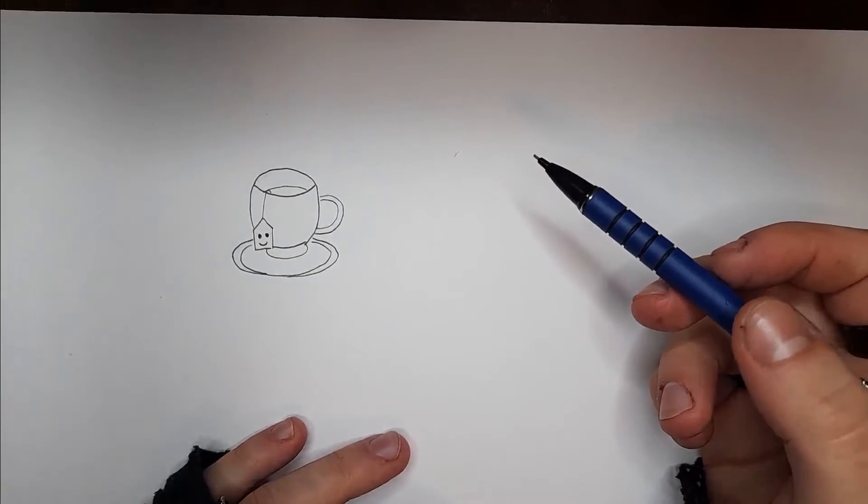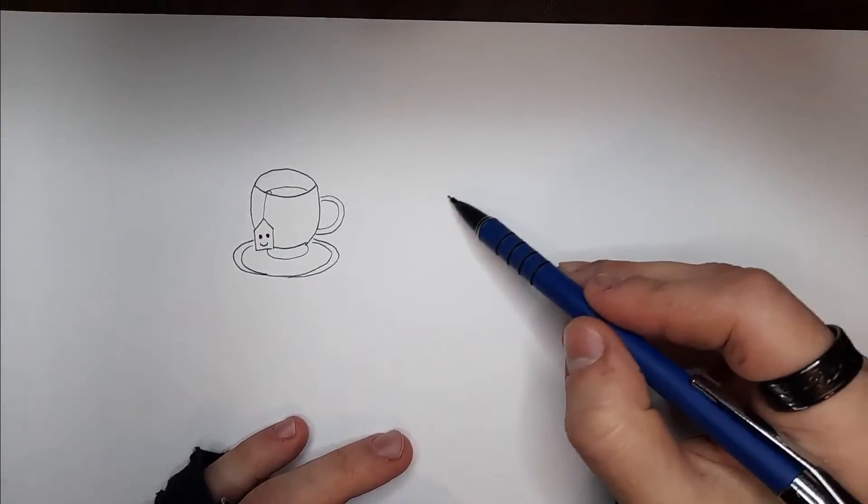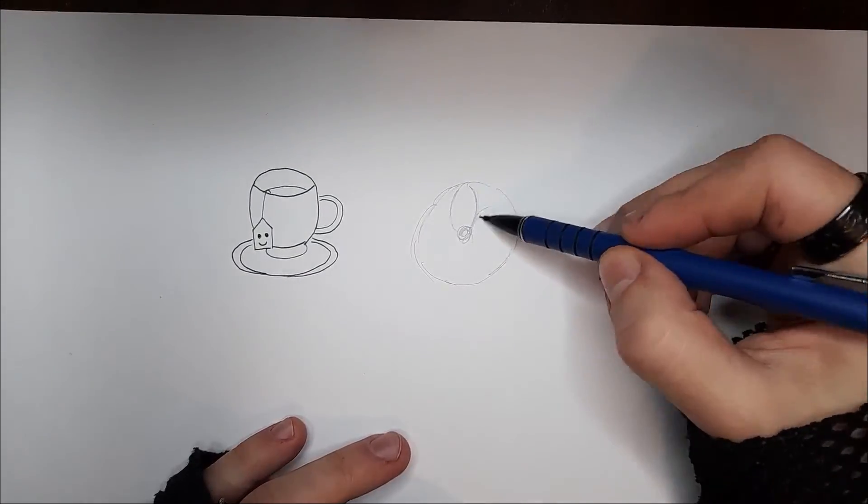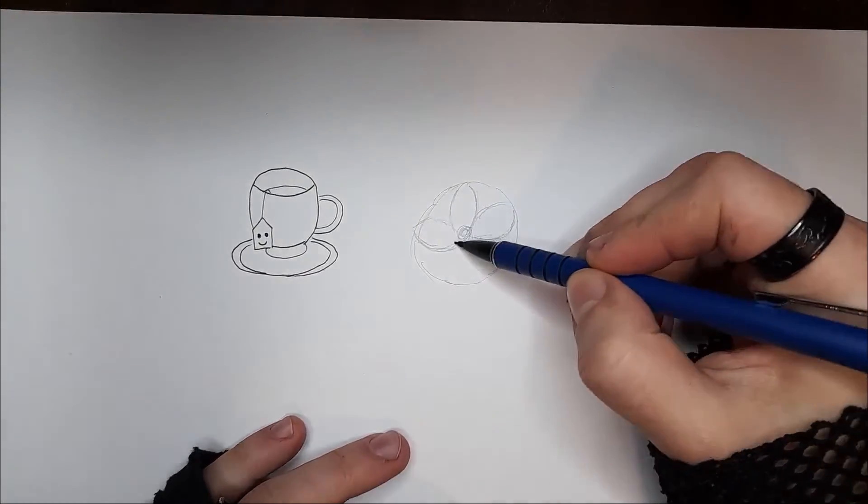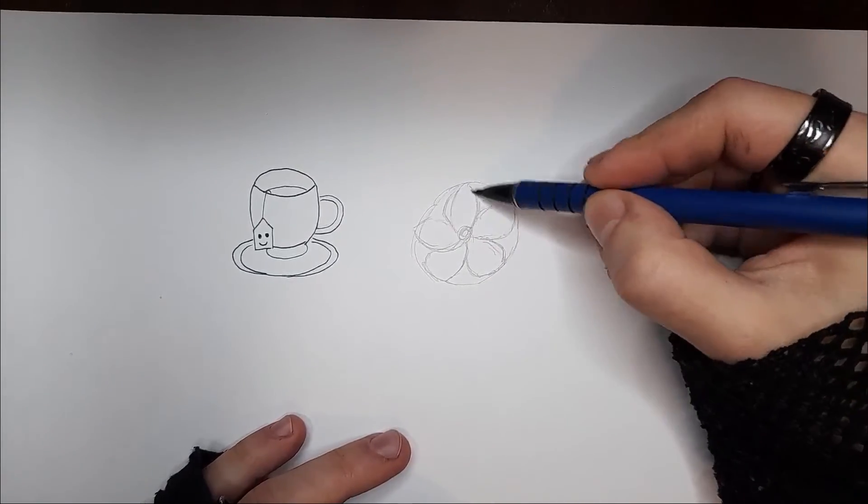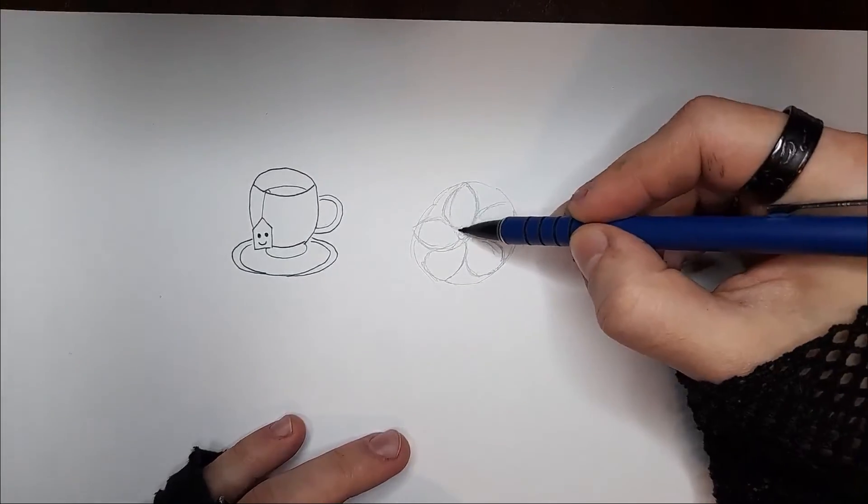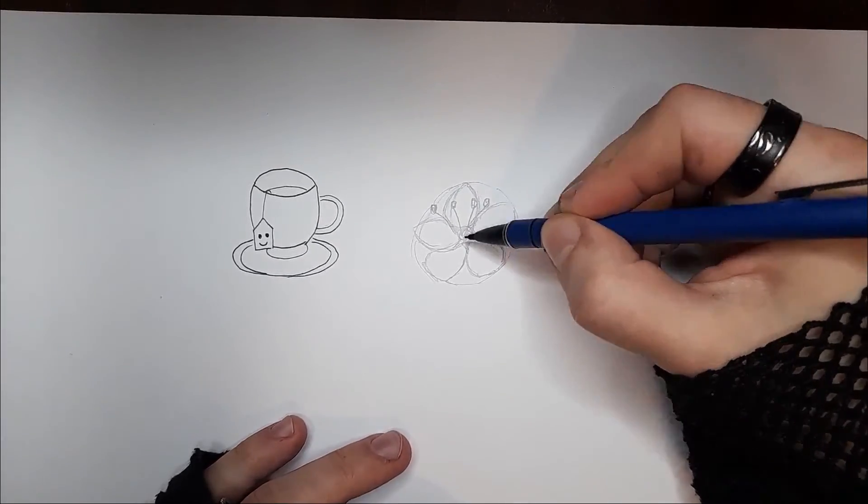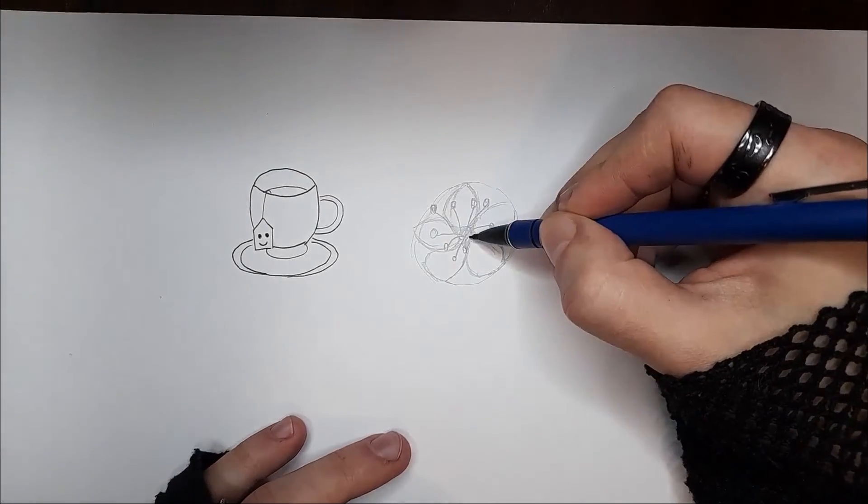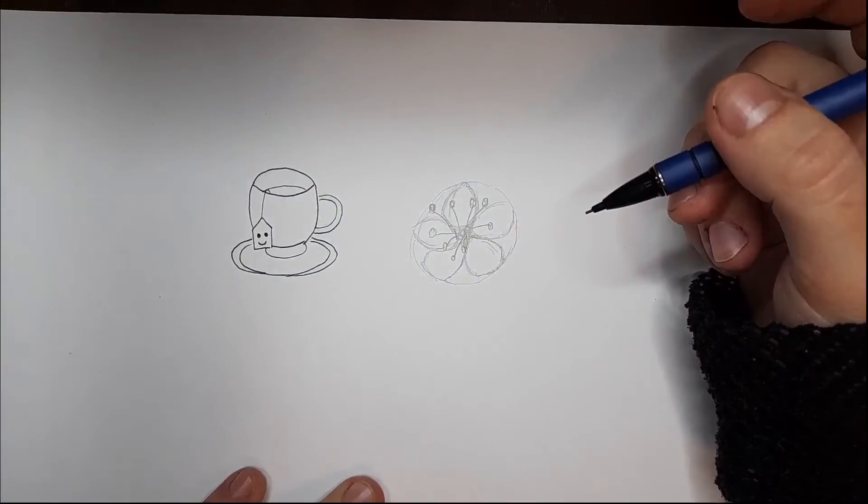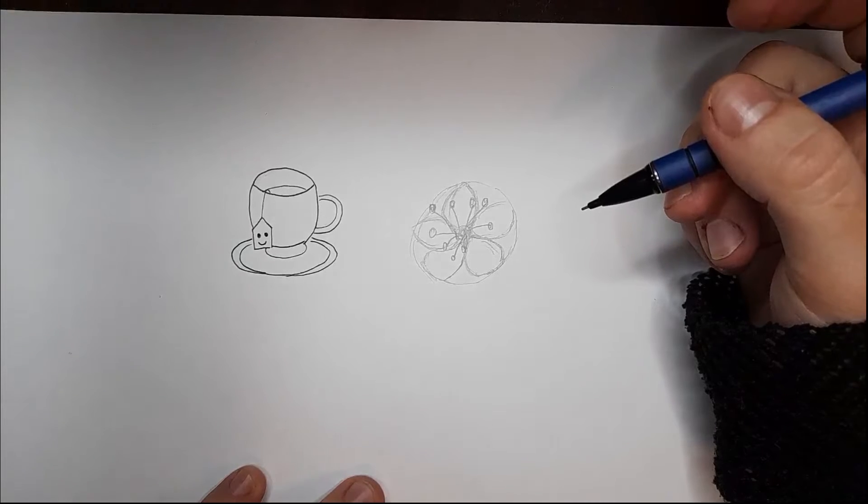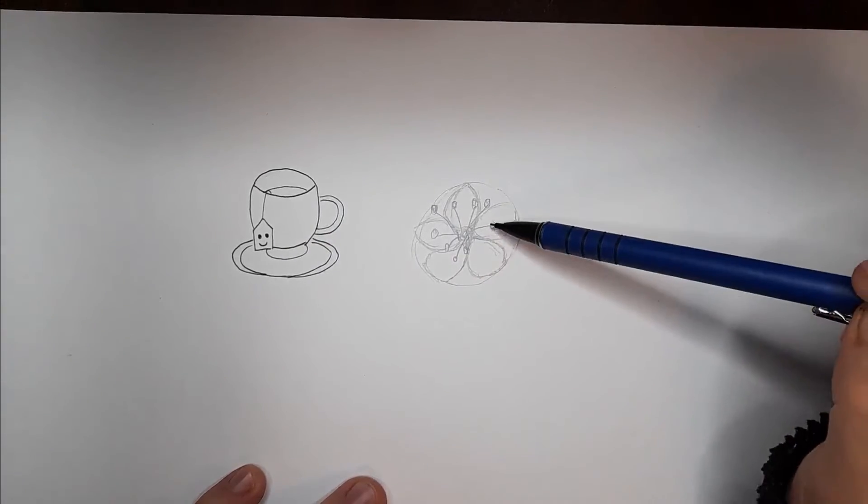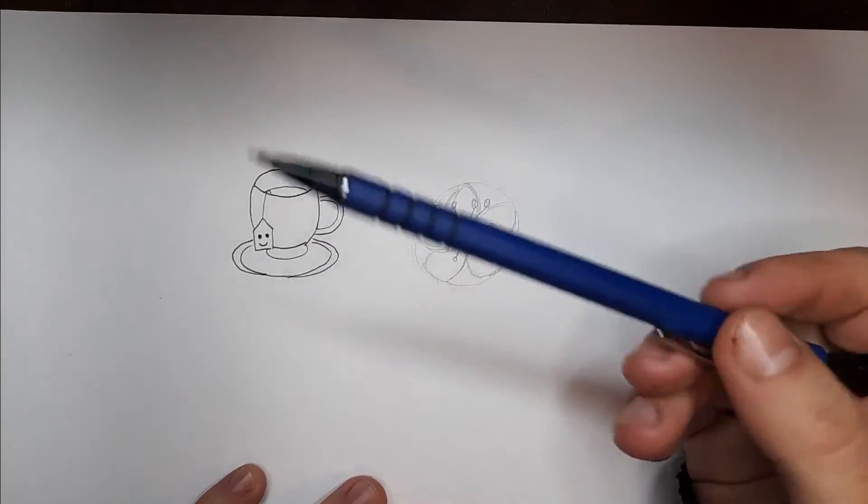So let's start again. I'm going to block you in first. So after you block it in, you can refine it. You can either choose to line it like this or to shade it with this.